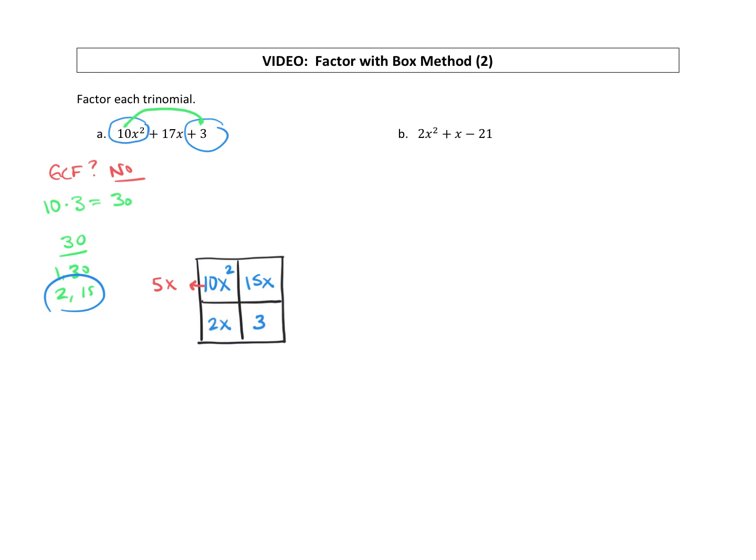Now let's find a GCF for our bottom row, factored out to the left. 2x and 3 have no common factors. So when we can't find a common factor, we use a 1.